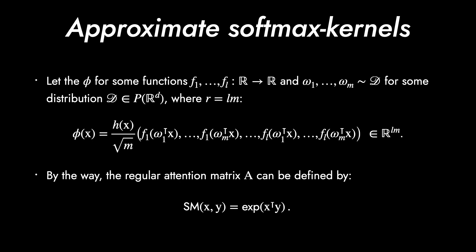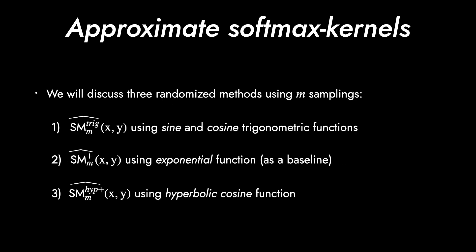They propose to use the phi mapping functions as follows. It consists of H of X discounted by the root M, L functions of scalar, and M random samplings from some distribution D. We will use the general centered isotropic multivariate Gaussian distribution having identity covariance. Please see that the deterministic SM function is simply the exponential of X transpose Y without using phi. We will discuss three randomized methods using M samplings. The first one uses the sine and cosine trigonometric functions, the second uses the exponential function as a baseline, and third uses the hyperbolic cosine function.